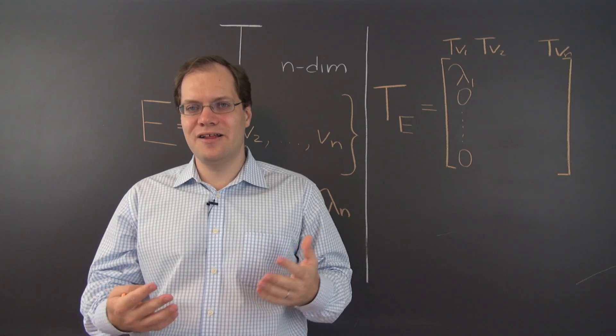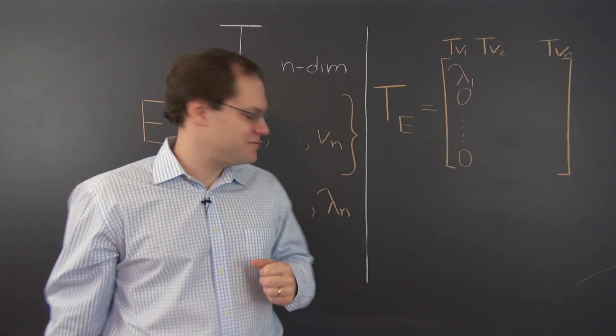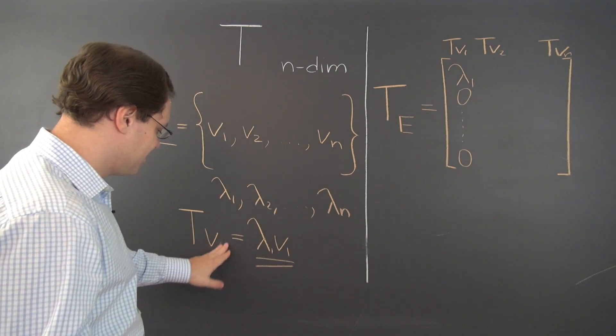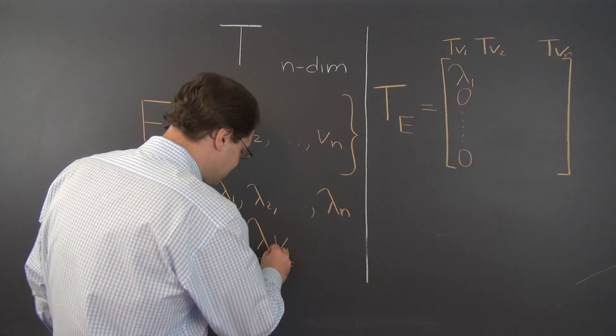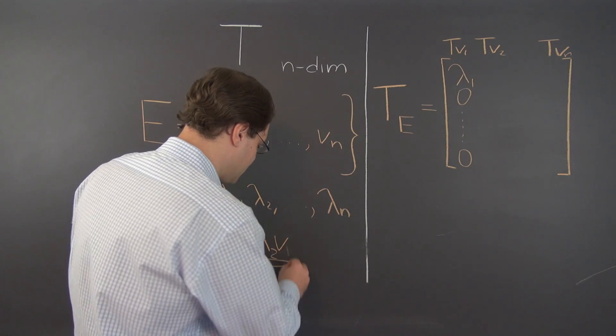Let's move on to the next column, and I think by now you see what's going to happen. Because, of course, T applied to V2 is lambda 2 times V2.